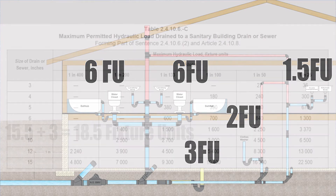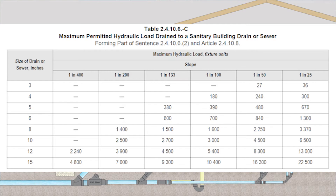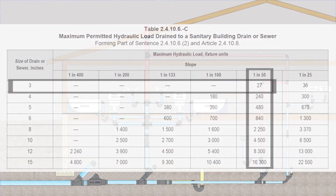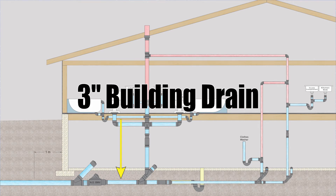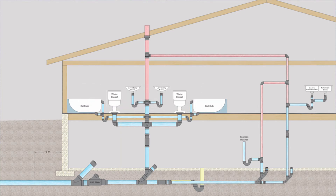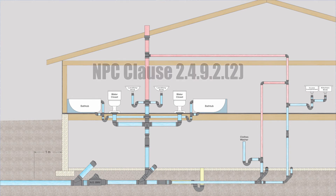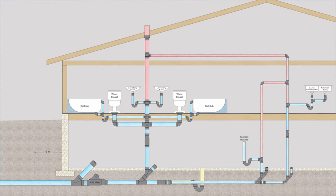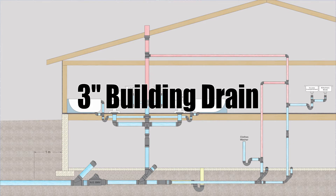Now I get to reference table 24106C. I need to know the slope of my pipe — I'm going to say this pipe is graded at 1 in 50. Going across on a three inch pipe, I can drain 27 fixture units at 1 in 50. Therefore this building drain can be three inches, no problem. Before I finalize that answer, I need to check code clause 2492 part 2. That says if I have a building drain or branch downstream of three or more water closets, it needs to be minimum four inches in size. But I only have two water closets, so three inch is good — that is my final answer.